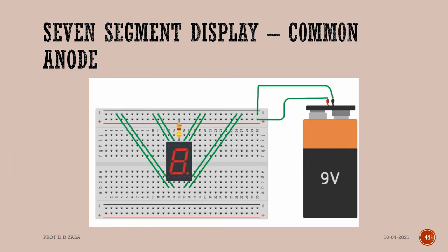Now let us see how to connect the seven-segment display on the breadboard and light all the LEDs. The seven-segment display used here is a common anode type. So the common anode is connected to the second power rail through a resistor. LED pins A, B, C, D, E, F, G, and dot are connected to the first power rail.